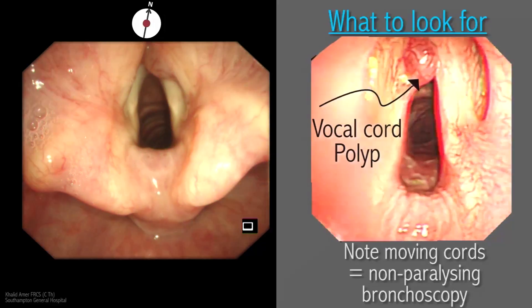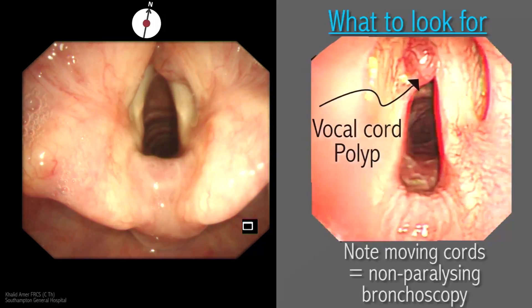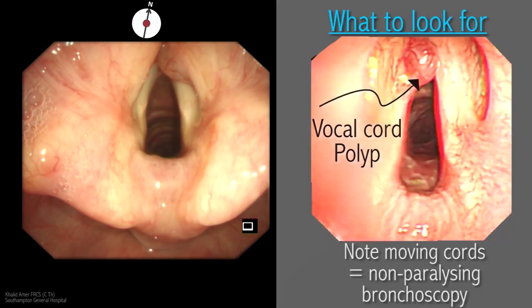Here is another example of a benign lesion — a vocal cord polyp — but a biopsy was taken by the ENT colleagues on this occasion.